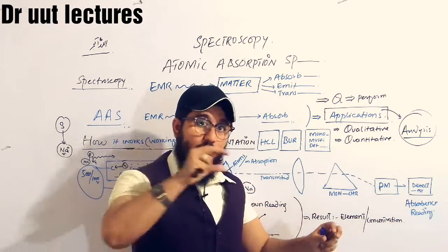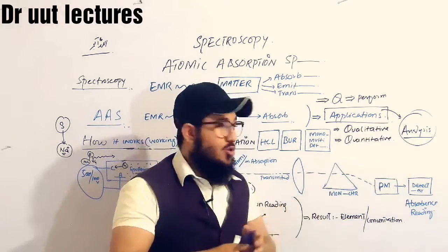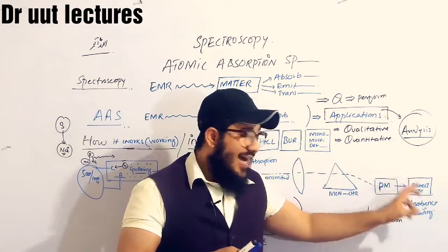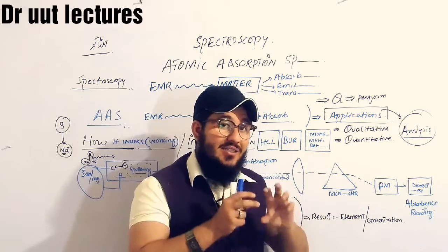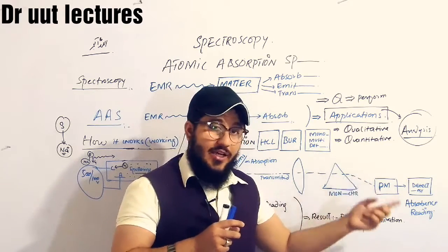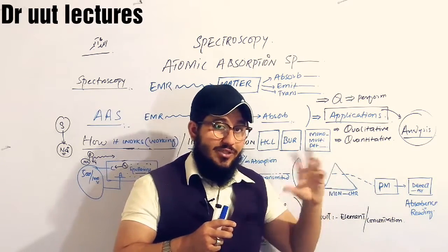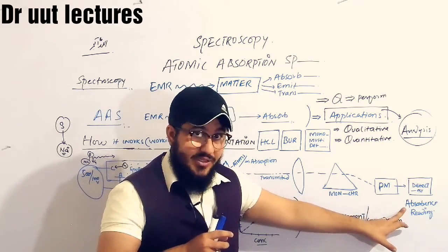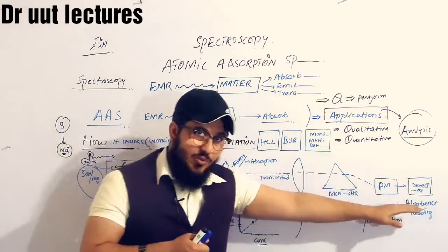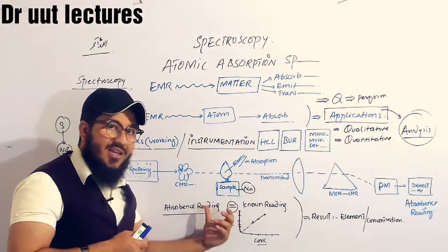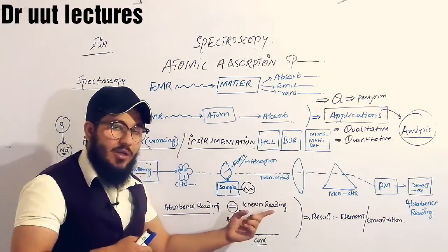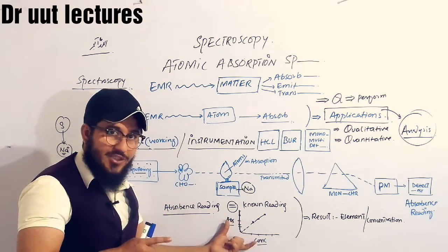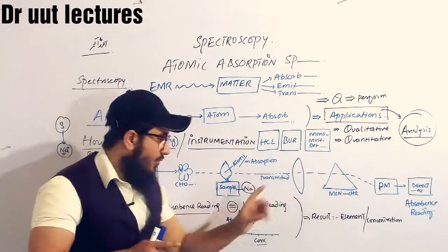As the name indicates — photomultiplier — our photons will be multiplied. These multiplied photons are targeted towards the detector. The detector will then detect these photons and at the end give the result on the reader display, which we will note. That reading is the absorbance reading. We will take this absorbance reading and compare it with the known reading, and do an interpretation in a graphical representation.